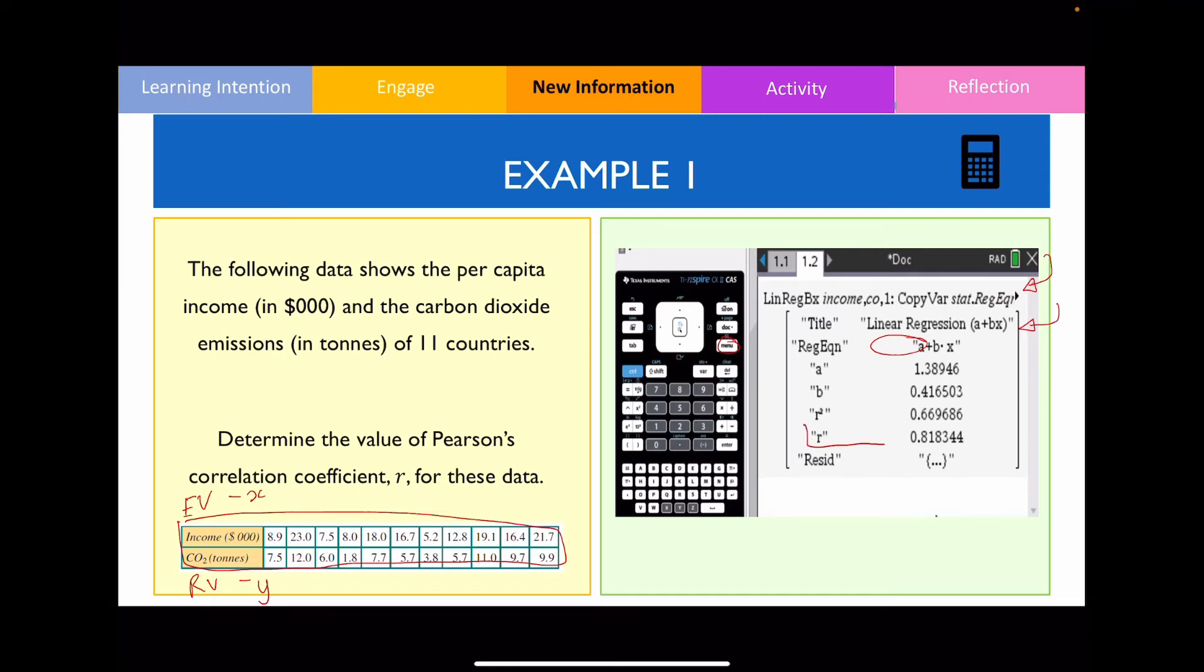But for now I just need you to concentrate for this particular value here, so as a result our answer is going to be equal to 0.818 if we rounded this to three decimal places.